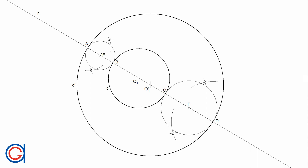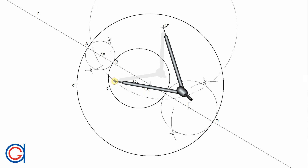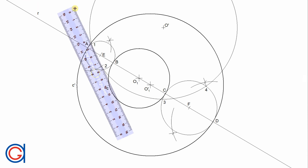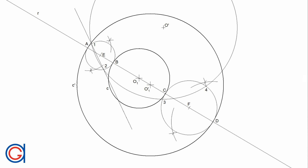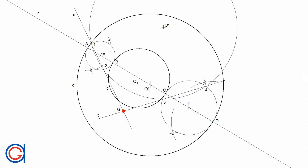Now that we have the two auxiliary internal tangent circles, we have to find the radical axis of these two circles. To do this, we start by picking a random exterior point O prime. Using this point as a center point, we draw a random circle which cuts the auxiliary tangent circles at four points: one, two, three, and four. The next step is to draw a line S passing through points one and two. We then draw a new line T going through points three and four, elongated until it cuts line S at a new point, which we call G, highlighted here in red.